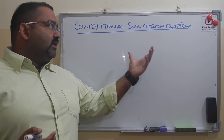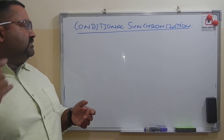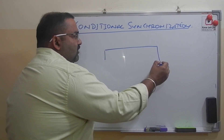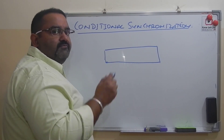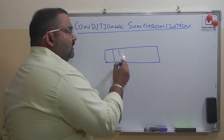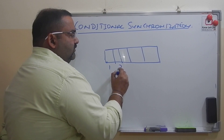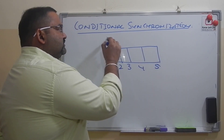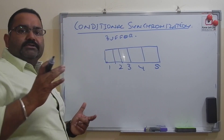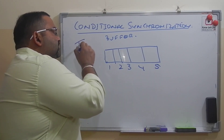To explain conditional synchronization, we take the example of the producer-consumer or bounded buffer problem. In this problem, we have a buffer of fixed size — in this case a buffer with five slots: 1, 2, 3, 4, and 5. Suppose we have two threads: a producer thread (TP) and a consumer thread (TC).